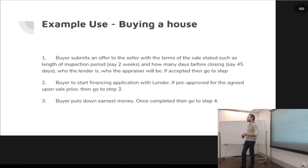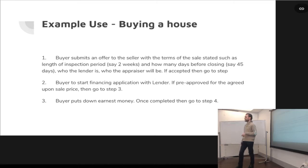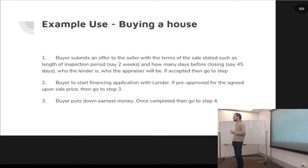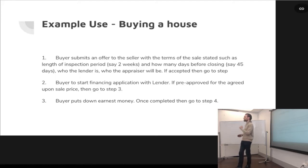Terms of the sale include length of the inspection time, how long before it closes, who the lender is, who the appraiser is, all the information about it. He submits that to the seller. If the seller accepts that contract, then the contract moves on to step two. In step two, the buyer applies for financing to get his mortgage loan. If the buyer is pre-approved for the sale price stated in the contract, then move on to step three. Step three: the buyer puts down his earnest money — you can literally send money to the contract, and it holds it there until either completion or cancellation.